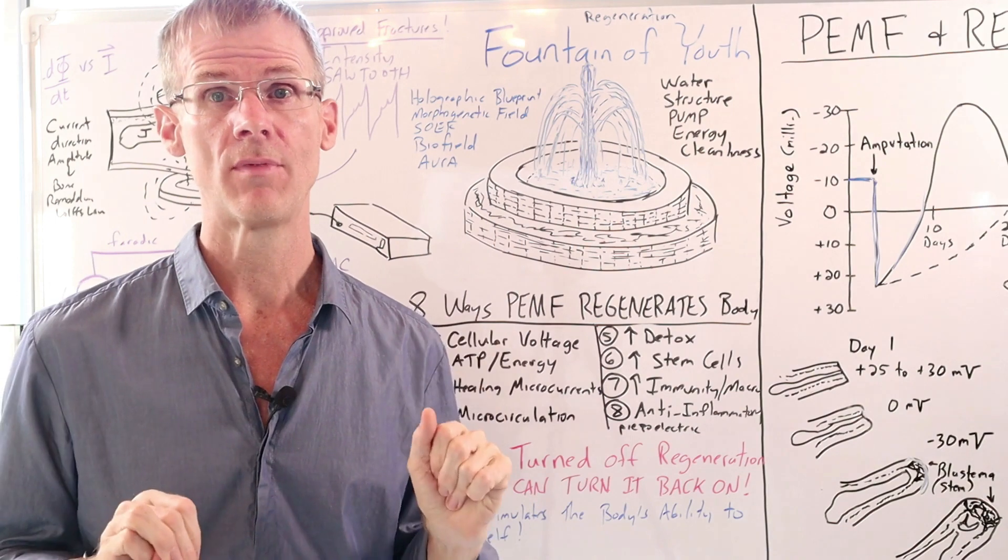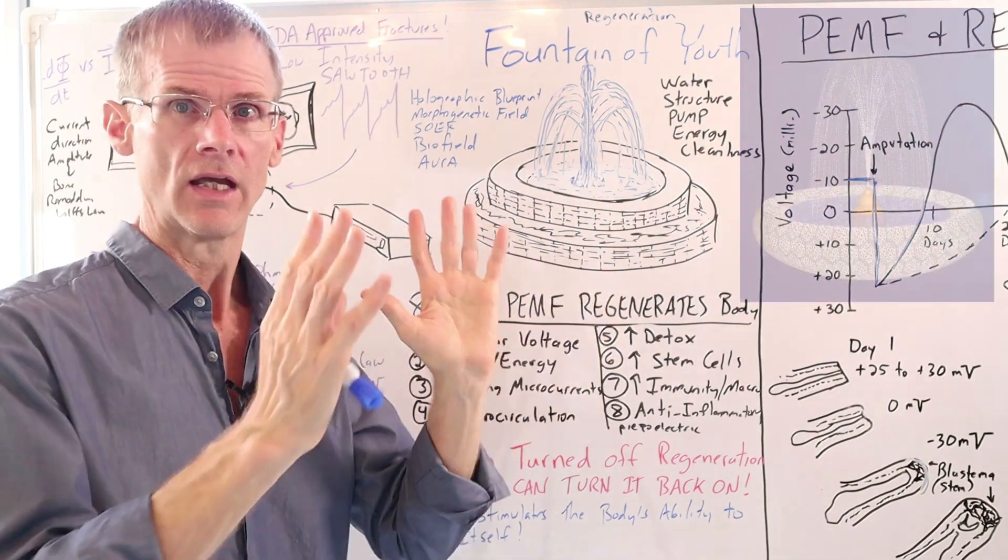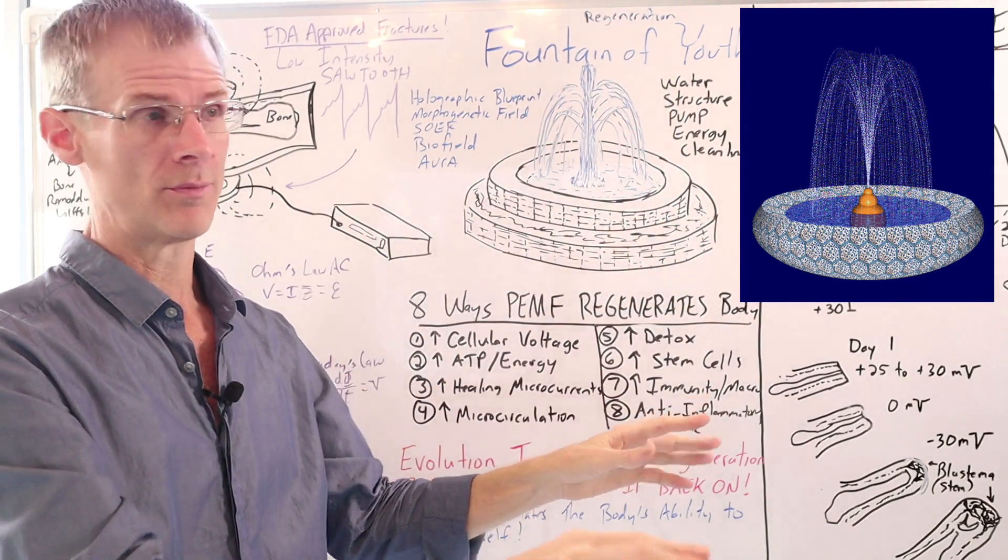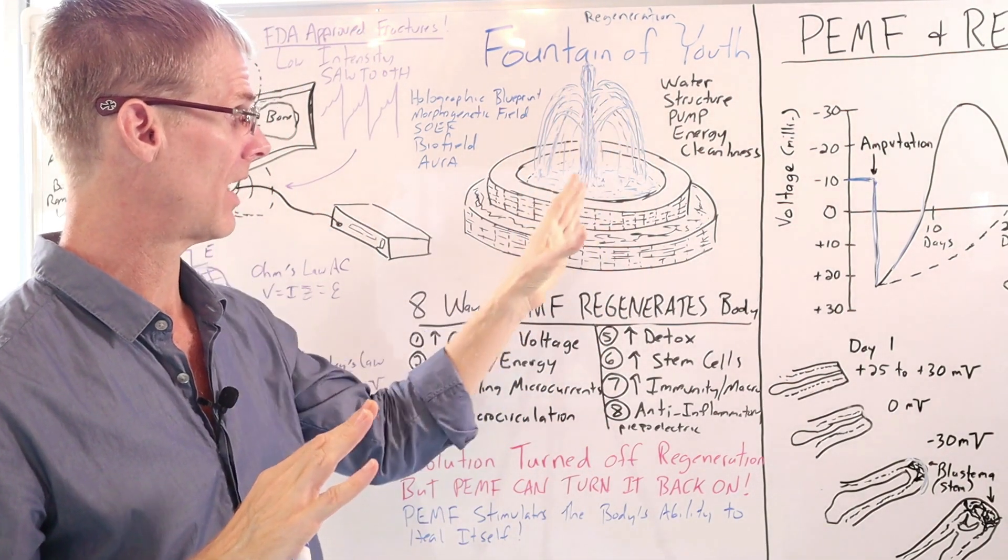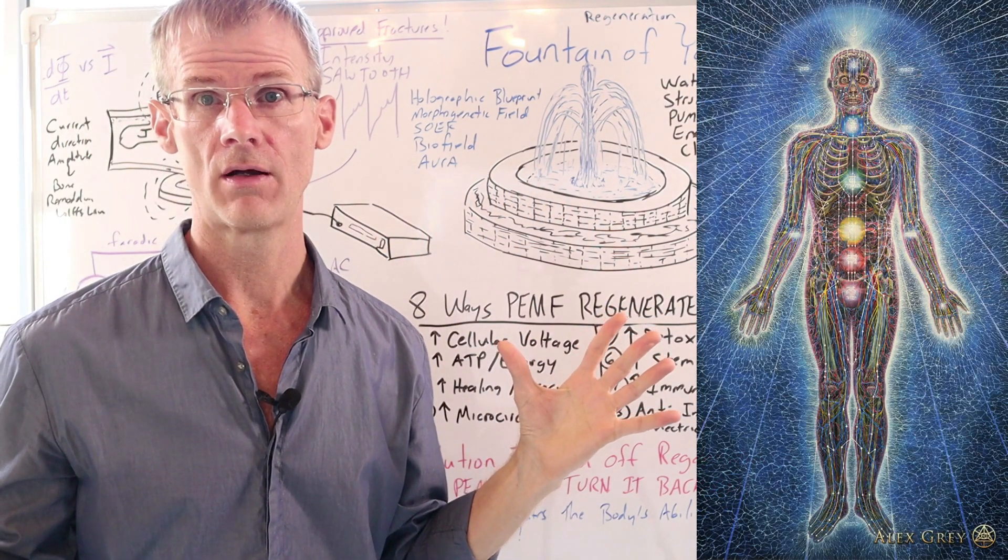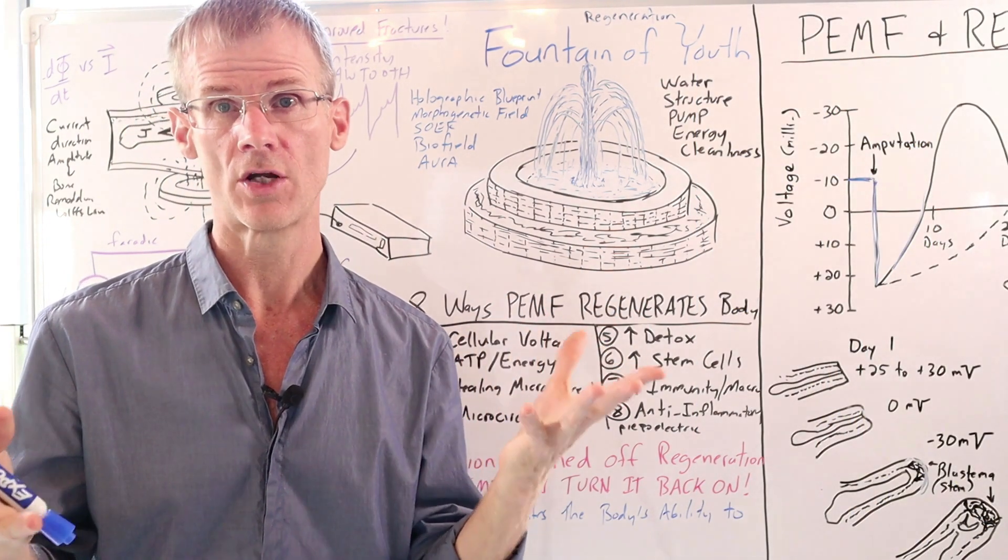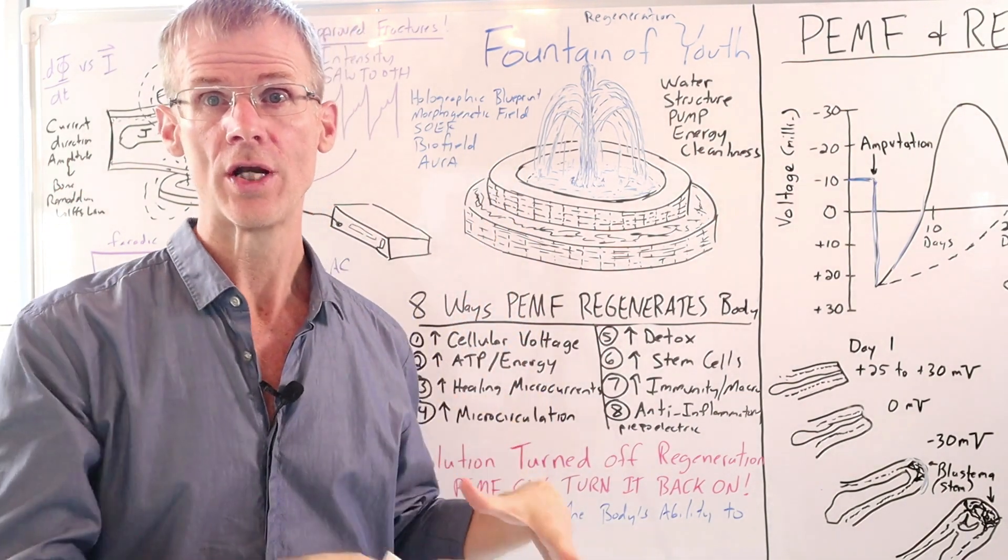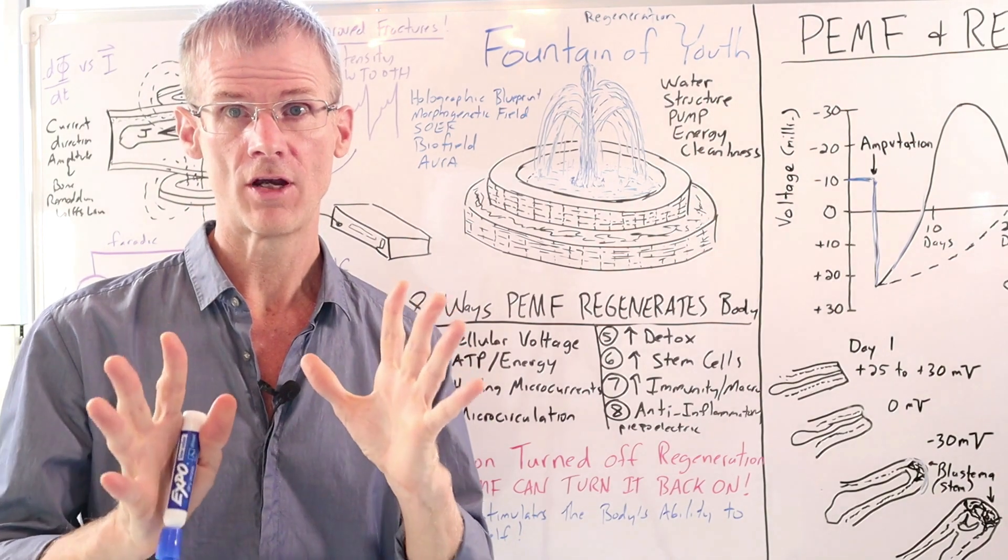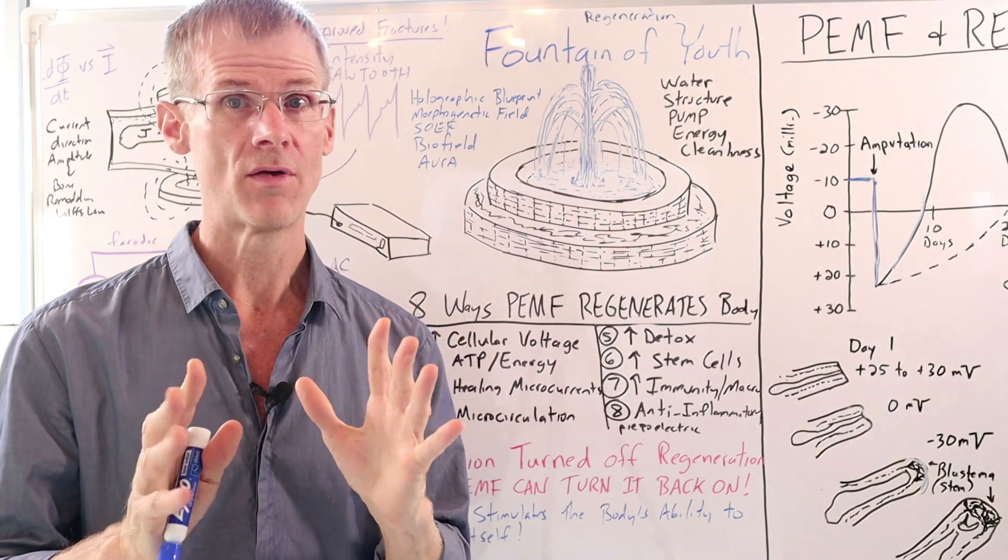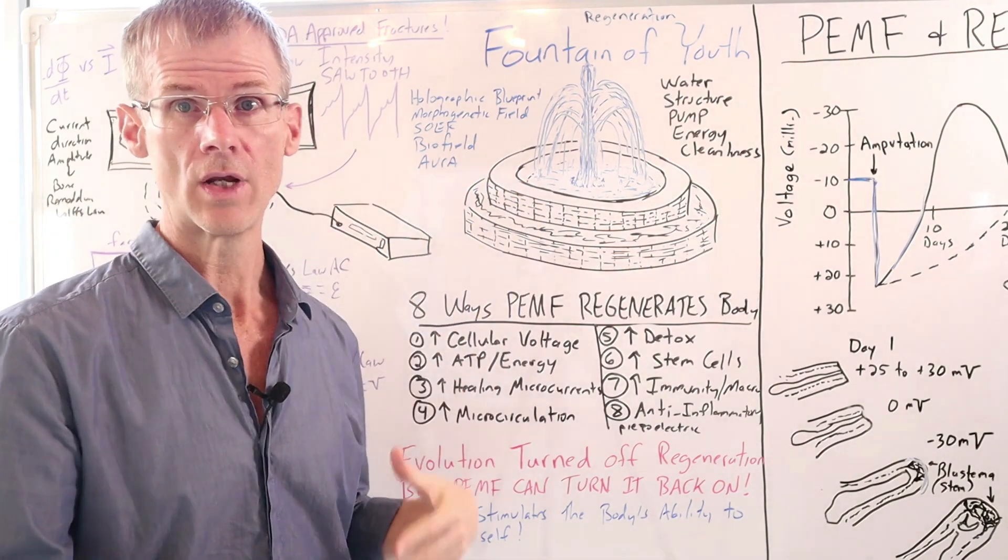So now I want to go through the eight ways that PEMF can help to regenerate your body. But first, let me just use this little metaphor here. So here we have like a water fountain. We've all seen beautiful water fountains. And if you look at it from a distance, it has a specific form to it. And you might just say, well, look at that beautiful shape. But when you get up close to the water fountain, you can see the water moving and flowing. So like the water fountain, which kind of has this geometry, we have like a holographic blueprint of perfect health, a biofield, an aura, what's called a subtle organizing energy field, or a morphogenetic field as Rupert Sheldrake calls it. So this holographic blueprint is guiding the regeneration process. What PEMF therapy does is it gives the body energy so that the body can heal itself. So I'm not saying that PEMF therapy heals your body or treats any disease. What I'm saying is that PEMF therapy gives your cells, tissues, and organs, and body energy so that your body can use the information in the blueprint to create healing and regeneration.